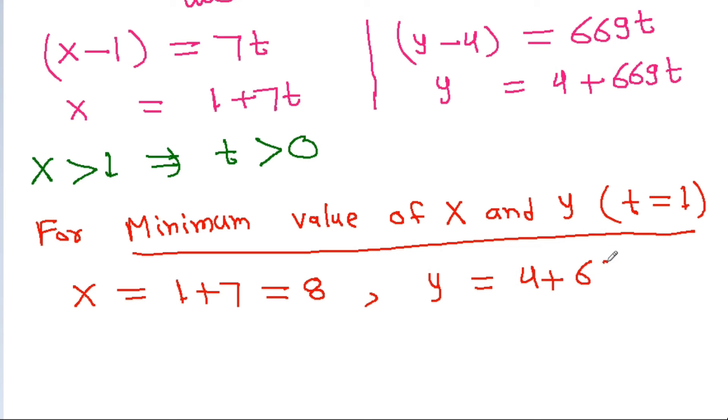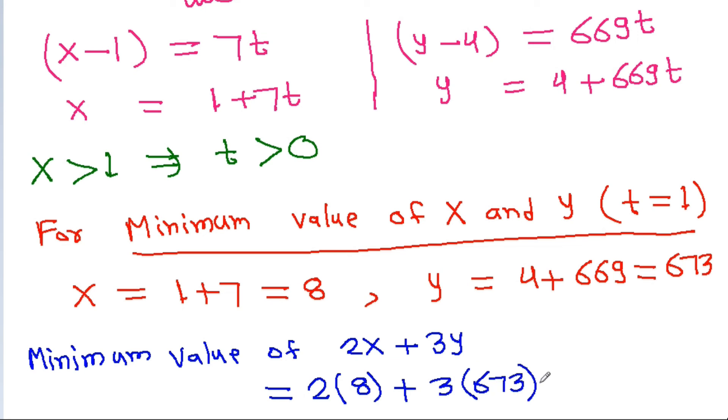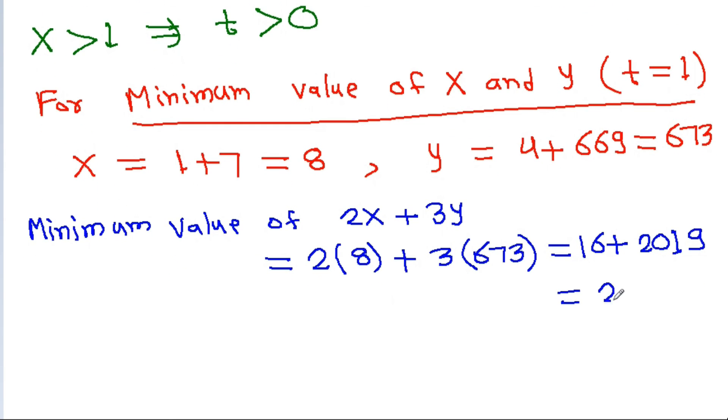And hence minimum value of 2x plus 3y it will be equal to 2 times 8 plus 3 times 673, and it is 16 plus, it is 9 and 7 times 3 is 21 and 6 times 3 is 18 plus 2 is 20, and it is 2035.